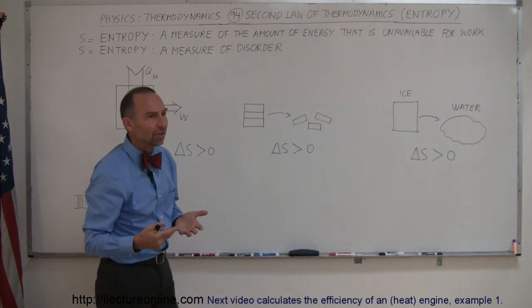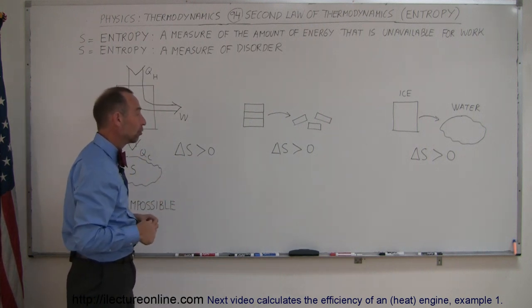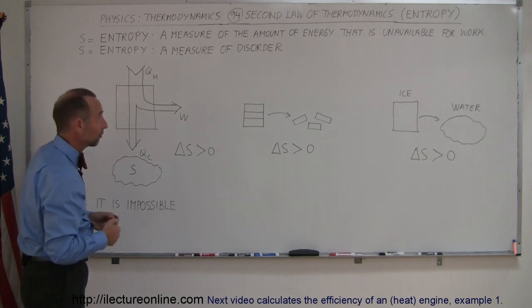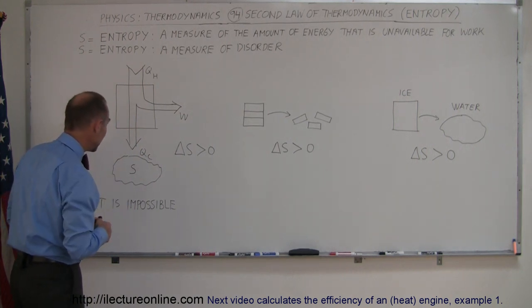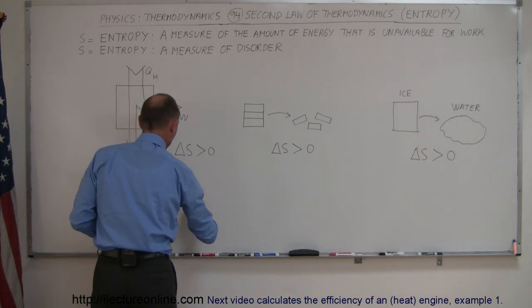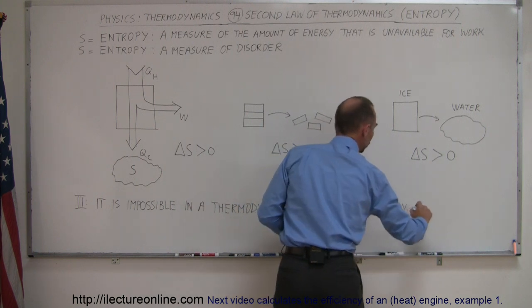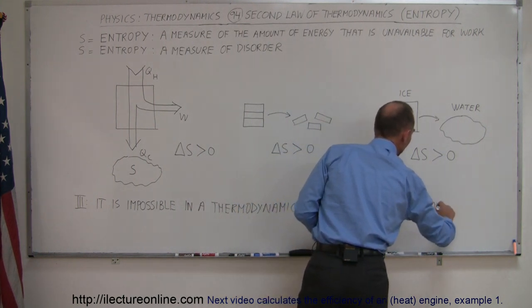So you can see that in any process that happens on its own, entropy tends to increase. So how do we express the second law of thermodynamics in terms of entropy? It is impossible in a thermodynamic process for entropy to decrease.